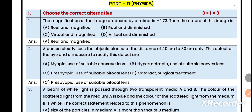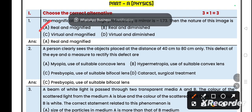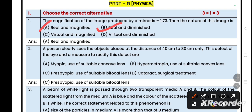First question: the magnification of the image produced by a mirror is minus 1.73. Then the nature of the image is option A, the right answer - real and magnified. More than one means it's magnified. If a minus is there, it means below the principal axis, that's why real and magnified.